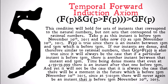This condition will hold for sets of instances that correspond to the natural numbers, but not sets that correspond to the rational numbers, because the rational numbers are dense. This thought experiment is a little complicated, but if you understand it, you'll completely understand the temporal forward induction axiom. Take P to be the statement 'this instant is before 5 p.m. November 20, 2015.' Take now, time t, as 1 p.m. November 20, 2015.